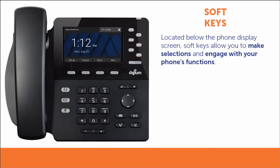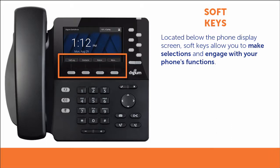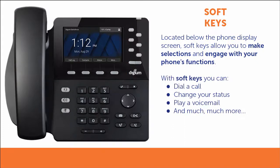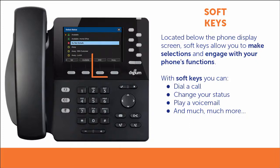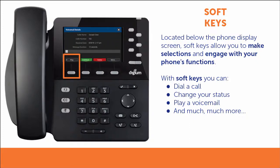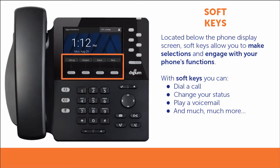Soft keys are located directly below the phone screen. Soft keys allow you to make selections and engage with your phone's functions. The selections and functions of the soft keys will change depending on the state of the phone. You may use them to dial a call, to change your status, to play a voicemail, or any number of things, depending on what you are doing with the phone.